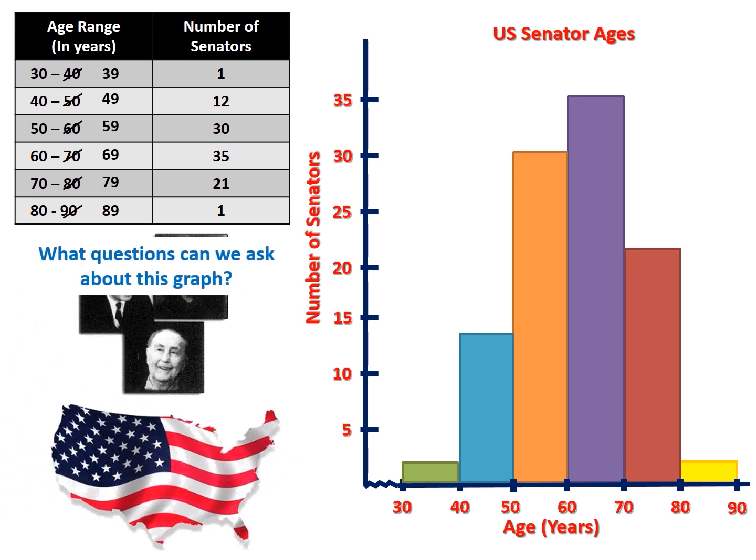What question can we ask about this graph? For example, how many people are in the age range of 60 to 70 years? That would be the purple bar, and the answer is 35 people.